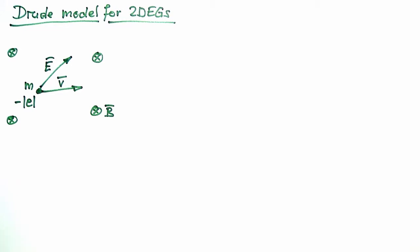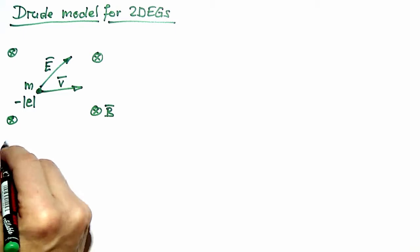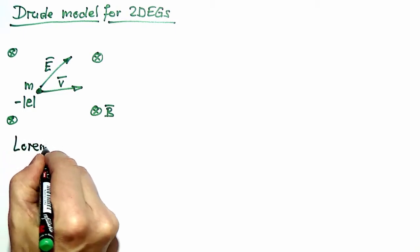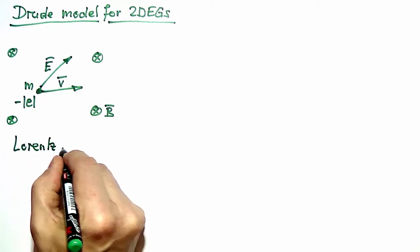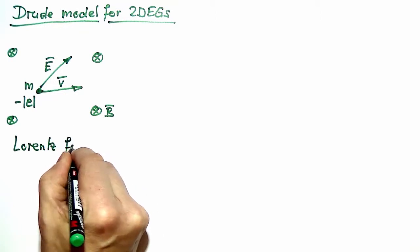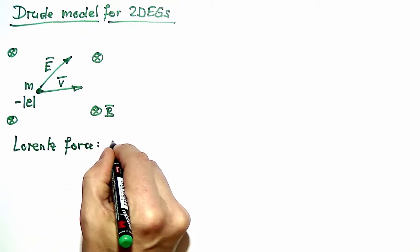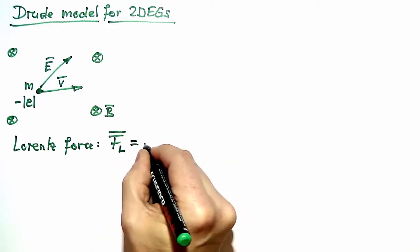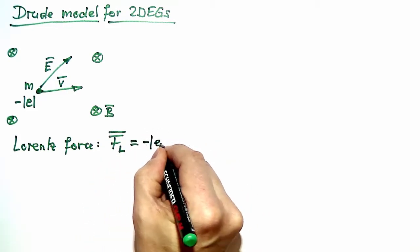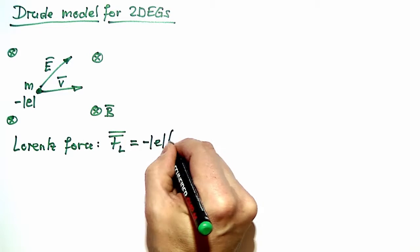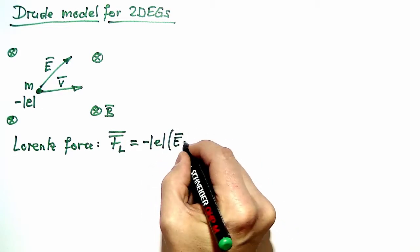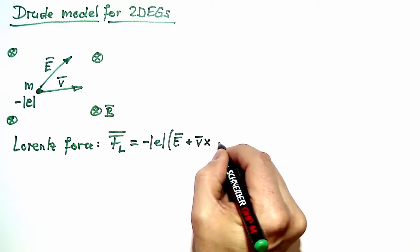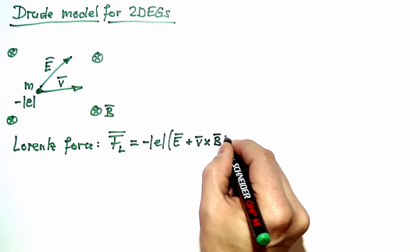In this setting a Lorentz force acts on the electrons, given by the familiar expression: the Lorentz force is the charge of the electron times the electric field E plus the velocity crossed with the magnetic field.